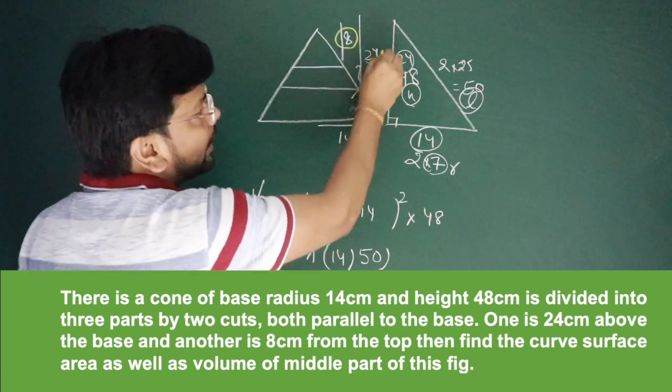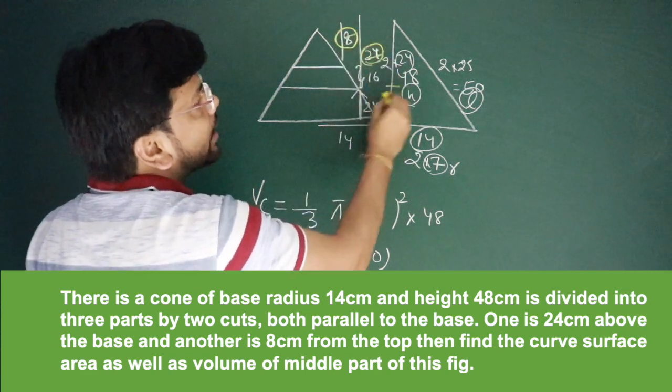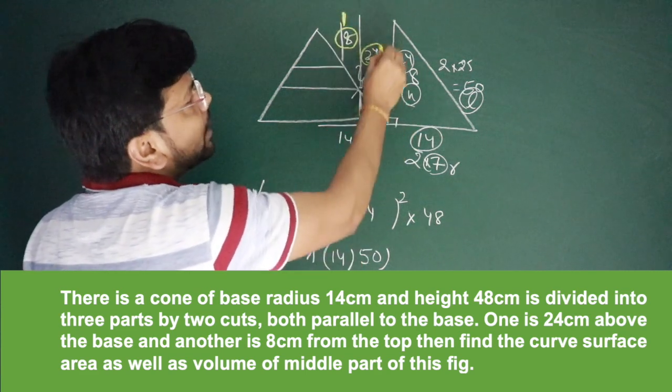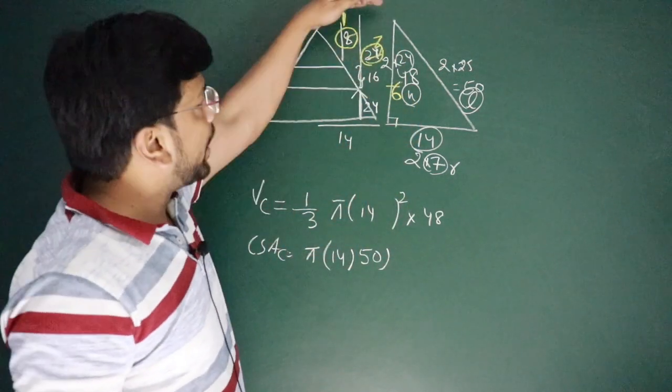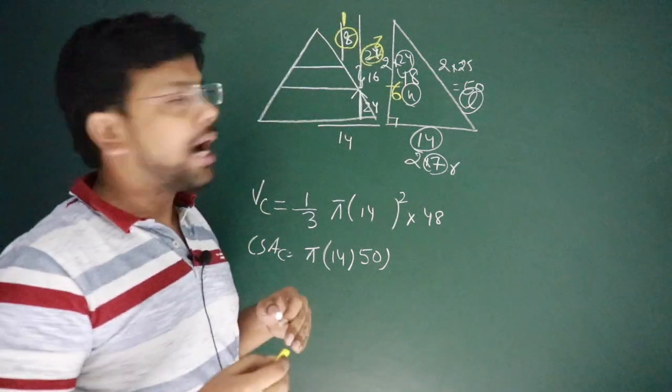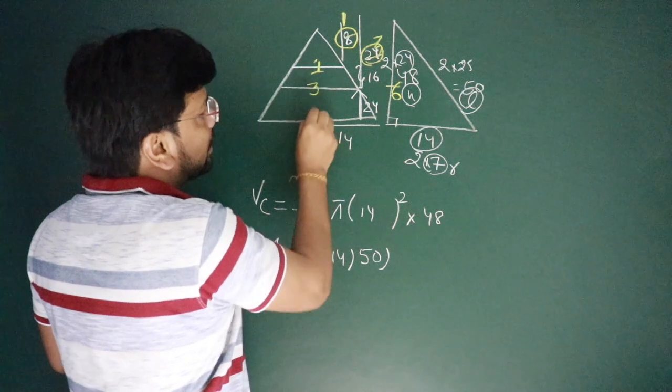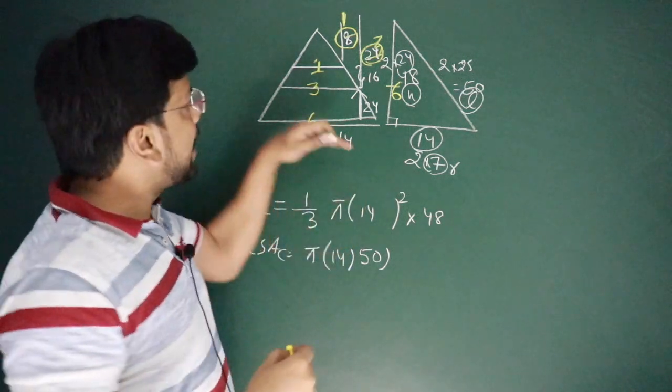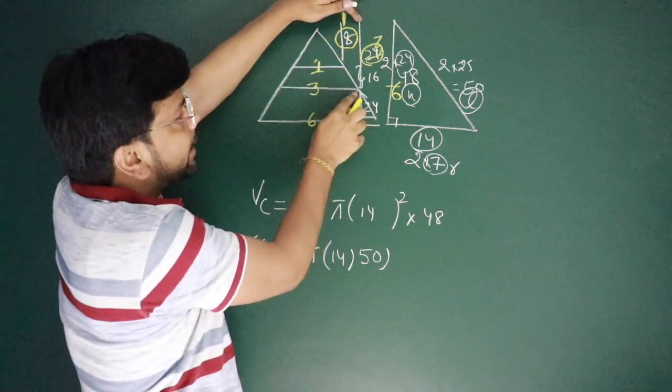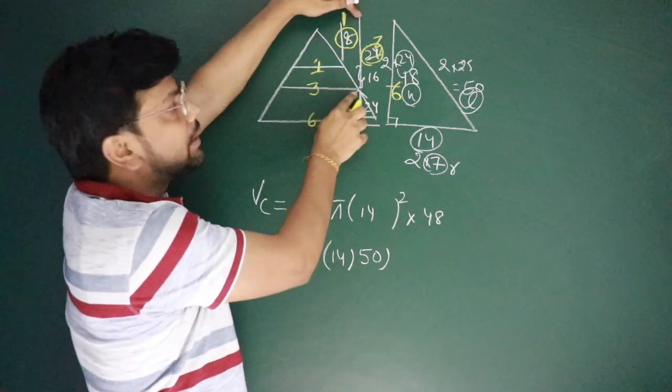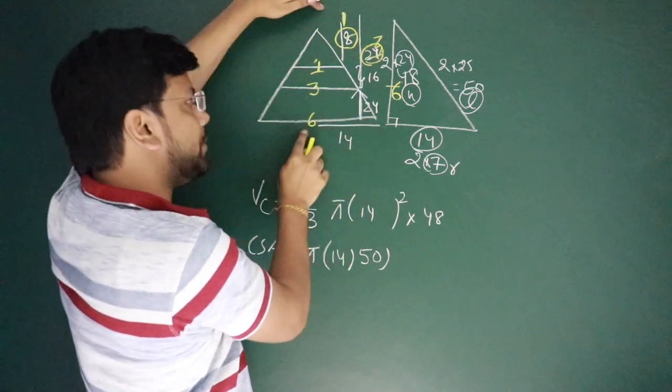Now let's apply Thales' theorem. This is 8, this is 24, and total is 48. If I find the ratio from 8, the ratio is 1:3:6. So if the height ratio is 1, 3, and 6, then the base ratio will also be 1, 3, and 6, because it's a similar figure with parallel lines. If this height is in ratio 1, the base is also 1. If the middle triangle height is in ratio 3, its base is also in ratio 3. If this is 6, then this is also 6.